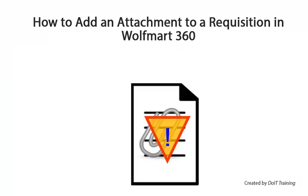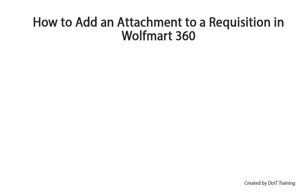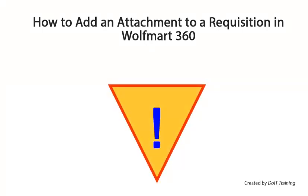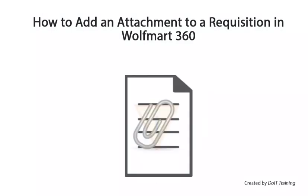Attachments can be both internal, which will remain within the university, or external, which will be sent to the supplier. It is important to know if your attachment is internal or external before attaching the document. An example of an internal attachment would be justifying price reasonableness — one way to do this is to provide three written quotes, which should not be sent to the supplier.